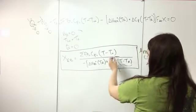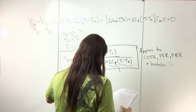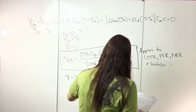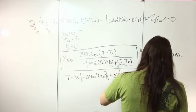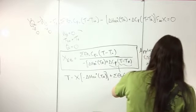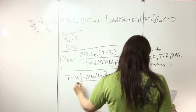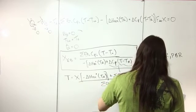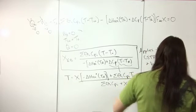We can also solve the X_EB equation for temperature. Doing that, we get T equals X multiplied by the heat of reaction at some reference temperature, plus the sum of theta_I C_PI times T0, plus X delta C sub P times T_R, all over the sum of theta_I C_PI plus X delta C sub P.